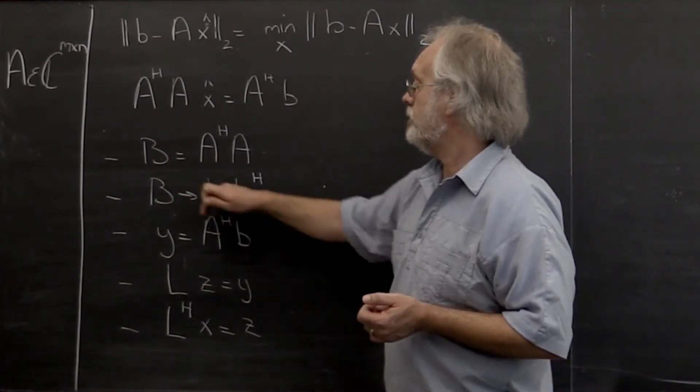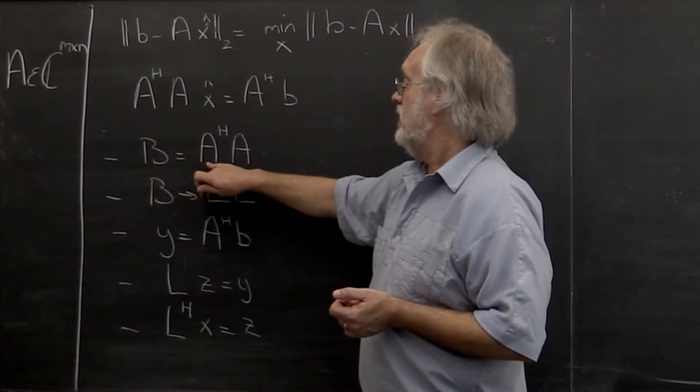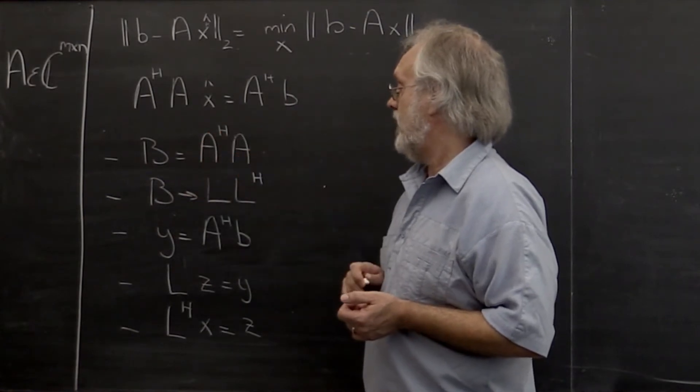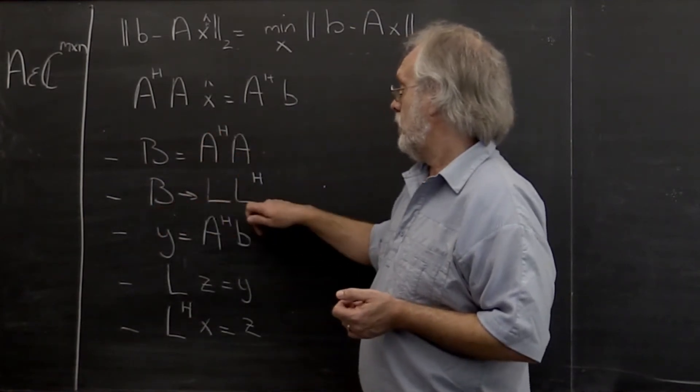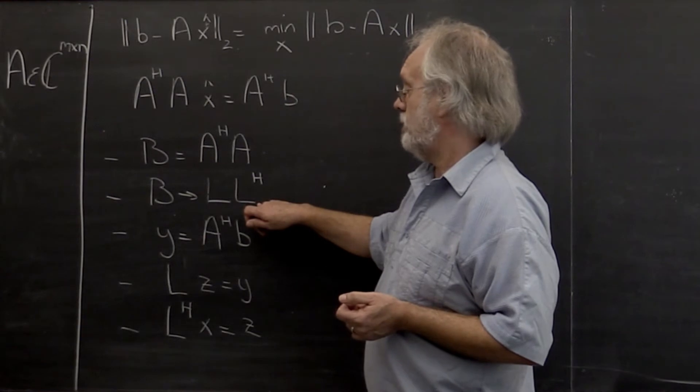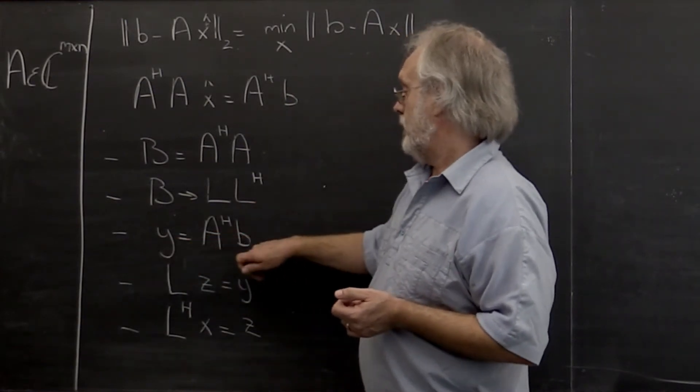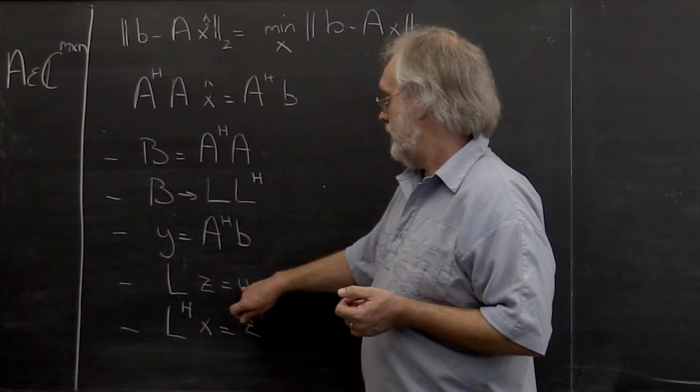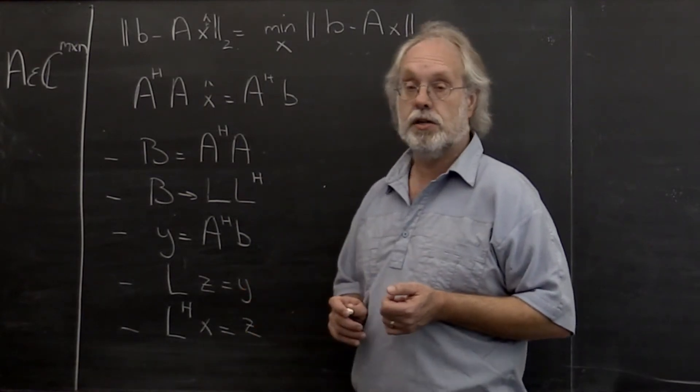And that involves computing a matrix B equal to A Hermitian transpose A, then computing the Cholesky factorization of that matrix, updating the right-hand side, and then performing two triangular solves.